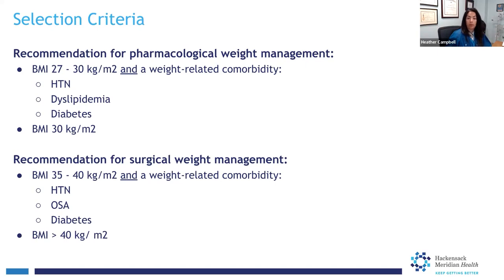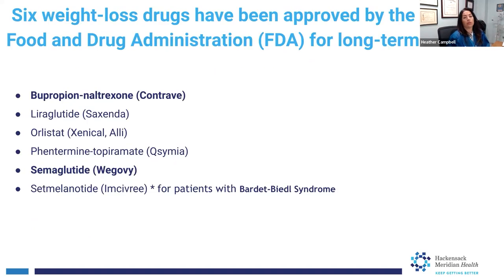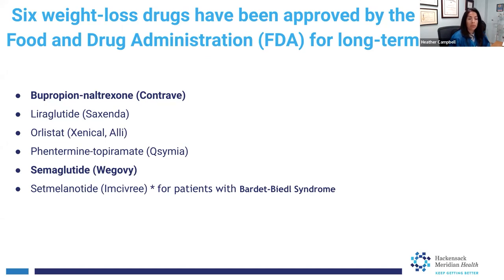Let's start with the medical, pharmacological weight loss. Six different drugs have been approved by the US FDA for long-term use. Contrave is an oral medication that works on the brain to control cravings. It targets receptors in the brain that tell us we're hungry. Contrave can be taken three times a day with meals and the goal is to control your eating.